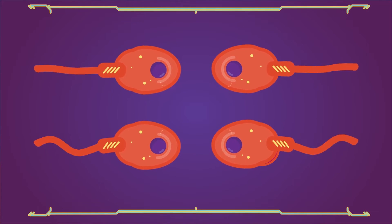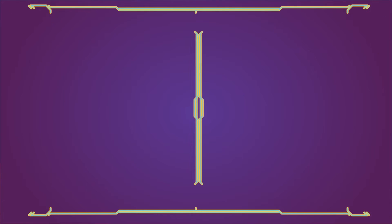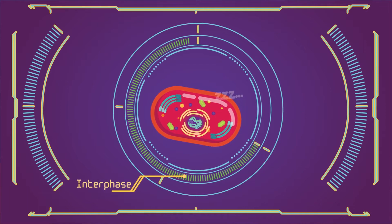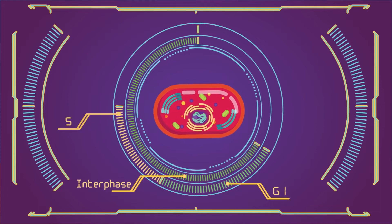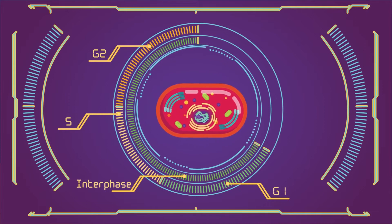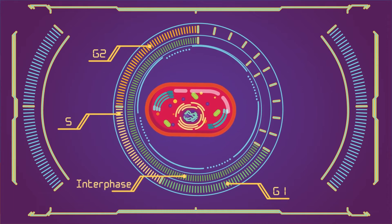Meiosis takes place in germ or sex cells called gametes: eggs in females and sperm in males. Similar to mitosis, cells also pass through the interphase (G1, S, and G2 phase) before they enter meiosis. Here are the distinct phases of meiosis: interphase, meiosis 1, cytokinesis 1, meiosis 2, cytokinesis 2.